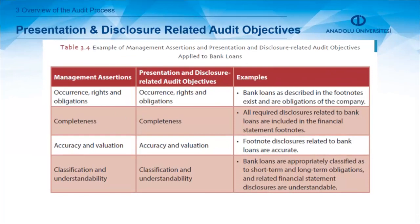Presentation and disclosure related audit objectives — the example here uses bank loans. How can bank loan accounts be audited under which audit objectives and which management assertions? Management assertions for bank loans include occurrence, rights and obligations — this is an obligation by the client. For the audit objective, presentation and disclosure related: accuracy, rights and obligations. As an example, bank loans as described in the footnotes exist and are obligations of the company.